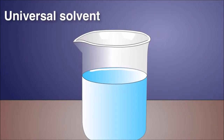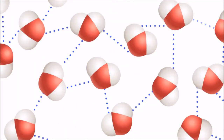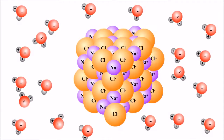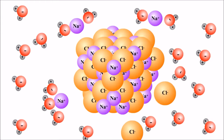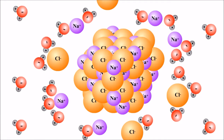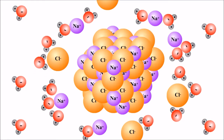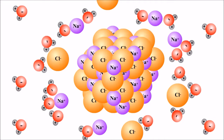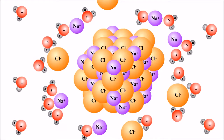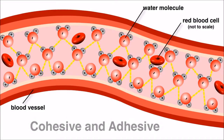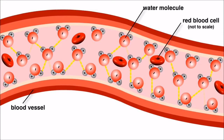Water is often called the universal solvent - many substances dissolve in it. This has to do with the polarity and hydrogen bonding ability of water molecules. When sodium chloride is placed in water, the negative ends of water molecules are attracted to the positive sodium ions and the positive ends to the negative chloride ions, causing them to dissociate. Since our cells are mostly water, these ion solutions allow chemical reactions to occur much more frequently.